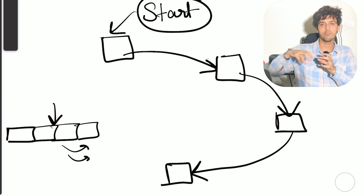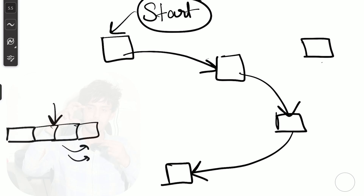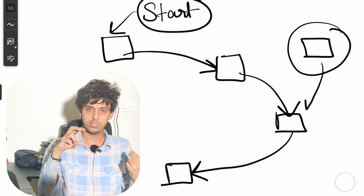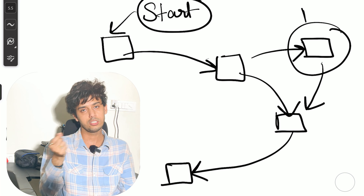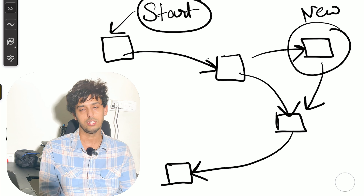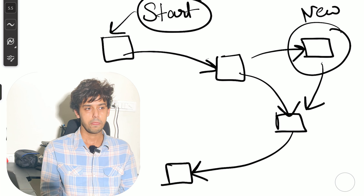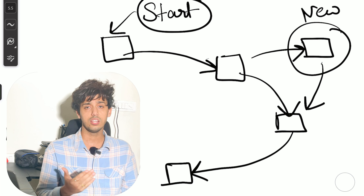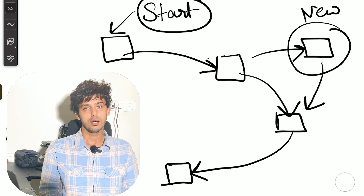If you want to add a node inside the linked list, you don't need to shift the elements. You just need to connect this node in the middle with the previous node and the neighbor node using pointers. So in cases where there is frequent addition and deletion of elements inside the list, linked list is efficient.